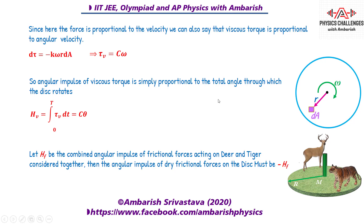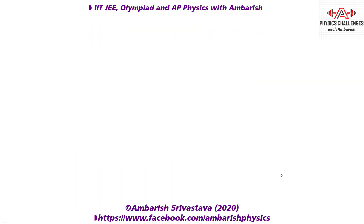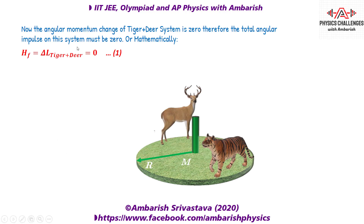Keep these things in mind: viscous torque is proportional to omega, and HF is the friction impulse on the deer plus tiger, with its negative acting on the disc. Now we apply the angular impulse-momentum theorem. Initially the tiger and deer are at rest. Finally, when the whole action is complete and the disc comes to a standstill, the tiger is at rest with the deer in its tummy. So the change in angular momentum of the deer-plus-tiger system is zero, meaning the net friction angular impulse must be zero. Therefore HF equals zero. This is equation 1.